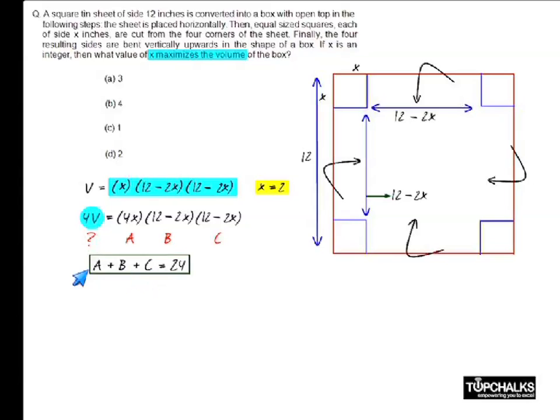So if a, b and c add up to 24, which is a constant, the product a, b, c will have a maximum value when a equals b equals c. Or in this case, each of them equal to 8.